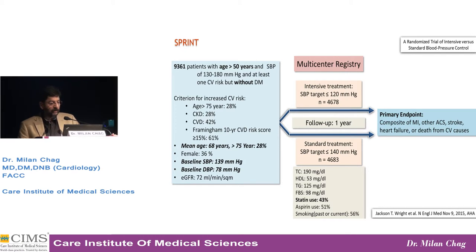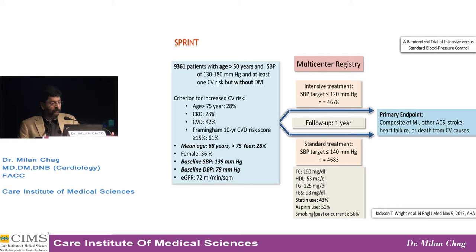As mentioned, patients who were elderly, more than 75, were almost 28% of this study. Baseline systolic BP was 139, diastolic was 78, and eGFR was 72 at entry.